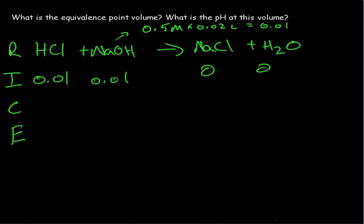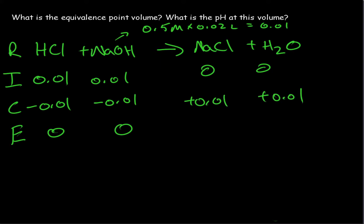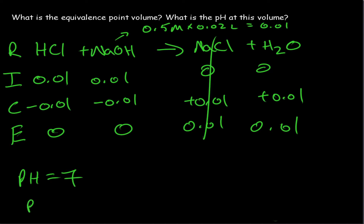Both NaOH and HCl react with each other, using up all of both the acid and the base, leaving us with no acid and no base left in the flask — only salt and water. Salt does not affect the pH, so we're left with pure water. The pH of pure water is 7, because pKw equals 14, which equals pH plus pOH. If pH and pOH are equal at the equivalence point, we divide 14 by 2, giving us 7. So for a strong acid and strong base titration, the pH is always 7 at the equivalence point.